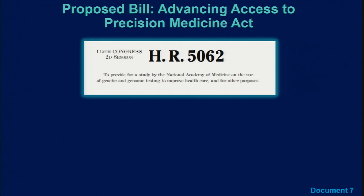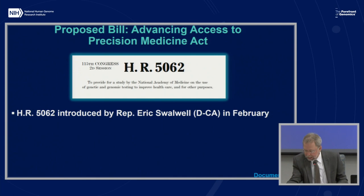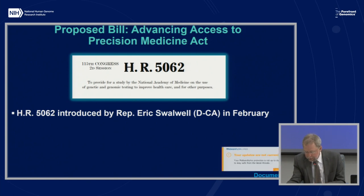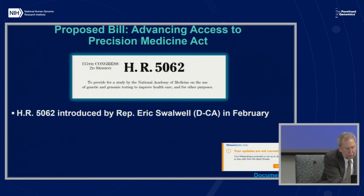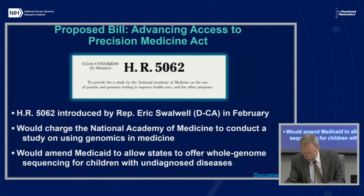On a legislative front, HR 5062, titled the Advancing Access to Precision Medicine Act, was introduced in the House of Representatives by Eric Swalwell, Democrat from California, in February, and has been referred to the House Committee on Energy and Commerce. The bill would primarily accomplish two things: charge the National Academy of Medicine to conduct a study of how genomics can improve preventive care and precision medicine, and amend Medicaid to allow states to offer whole genome sequencing clinical services for children with undiagnosed diseases.